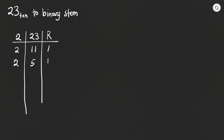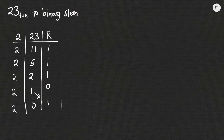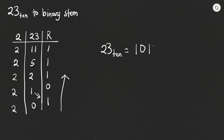How many times would 2 go into 5? It will go 2 times, which is 4, remainder 1. How many times would 2 go into 2? It will go once, left with 0. How many times would 2 go into 1? It cannot, so we write 0 and bring the 1 to the bottom. We write our answer from bottom up, so 23 base 10 is equal to 10111 base 2.